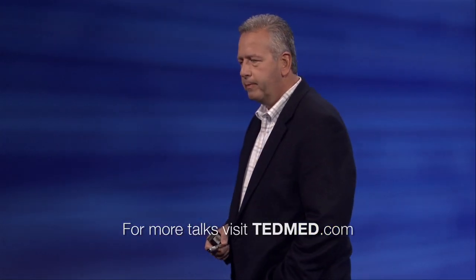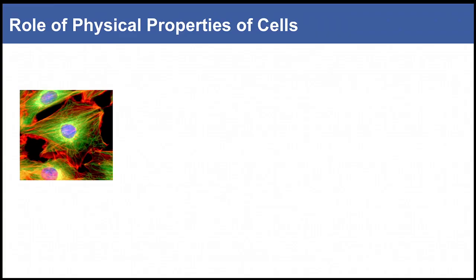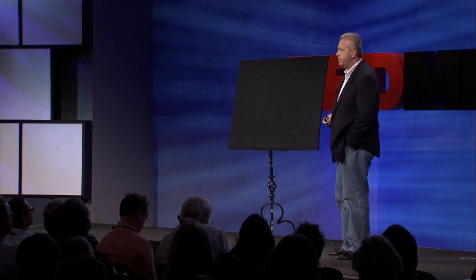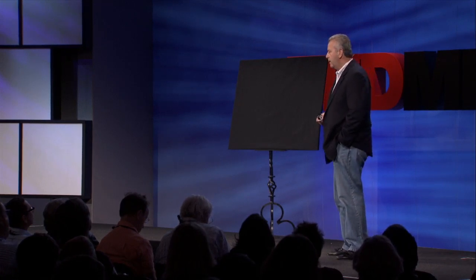Physical properties — things like size and shape and elasticity — are very interesting to us. Take, for example, this cancer cell. Did you know that malignant human mammary cells are ten times softer than regular cells? They're more elastic. And metastatic cancer cells are ten times softer than regular cancer cells. This softness, this elasticity, is derived from genetic changes that change the cytoskeleton and make these cells softer. In fact, elasticity is a phenotype of cancer.